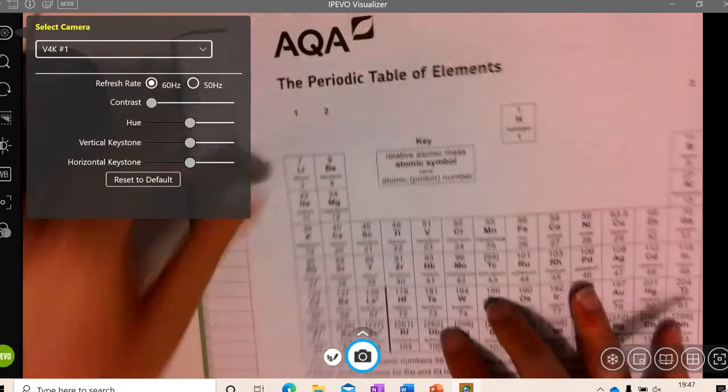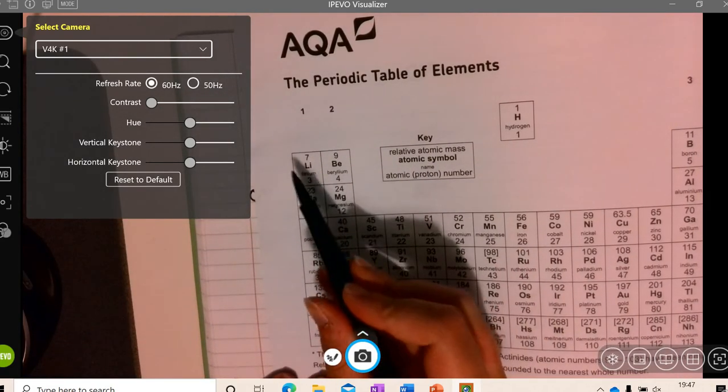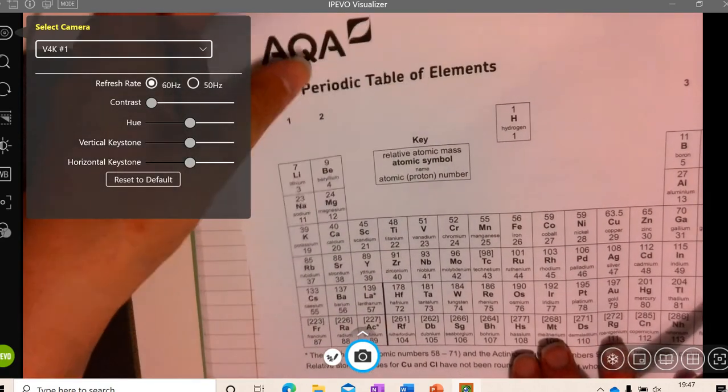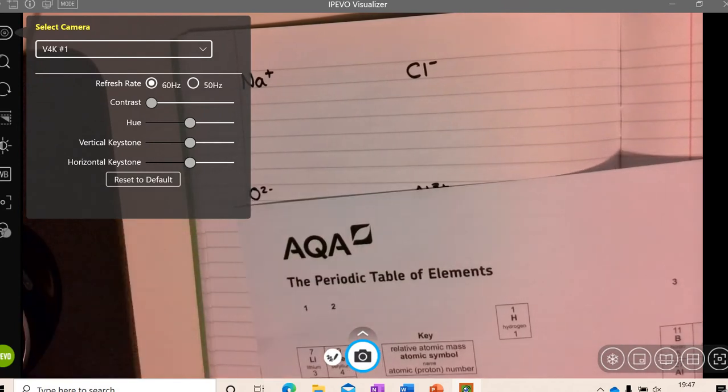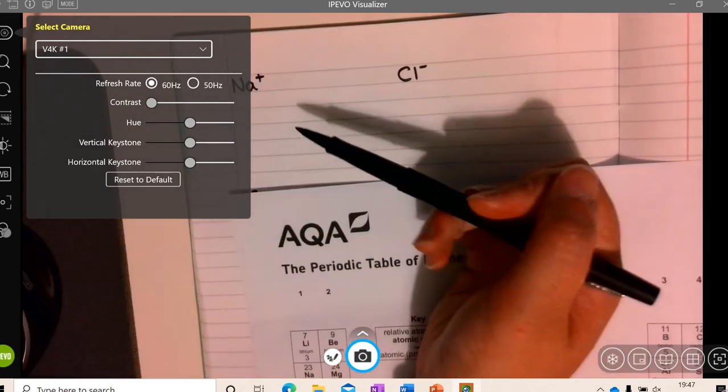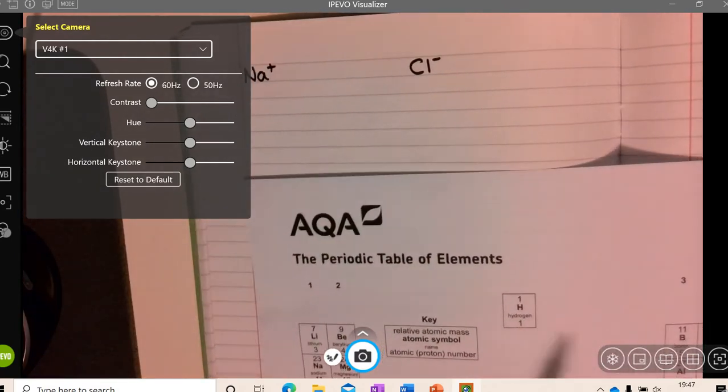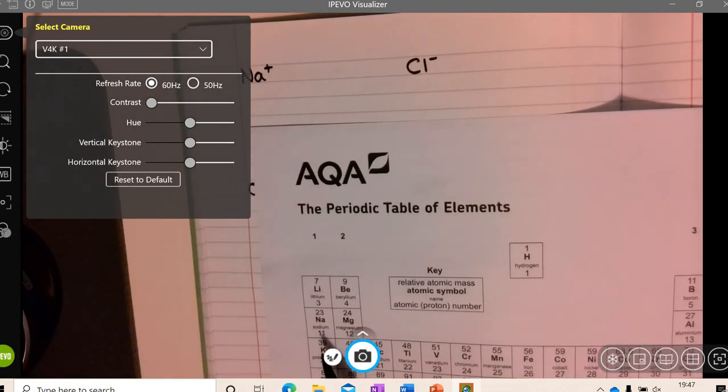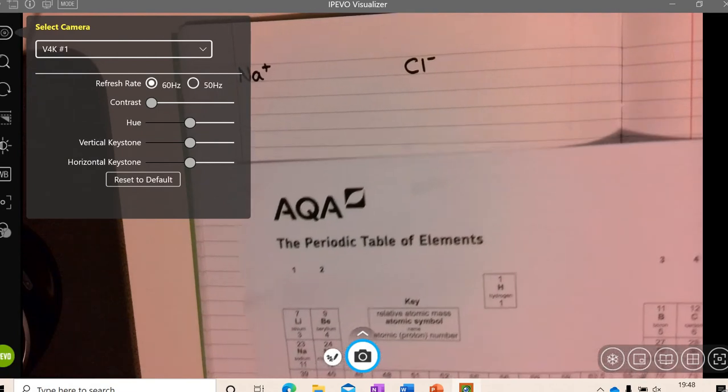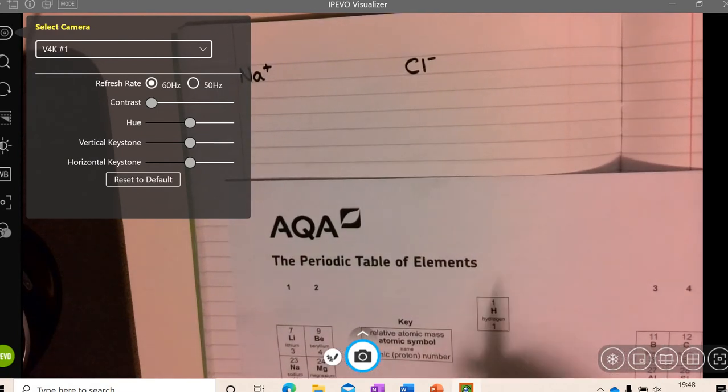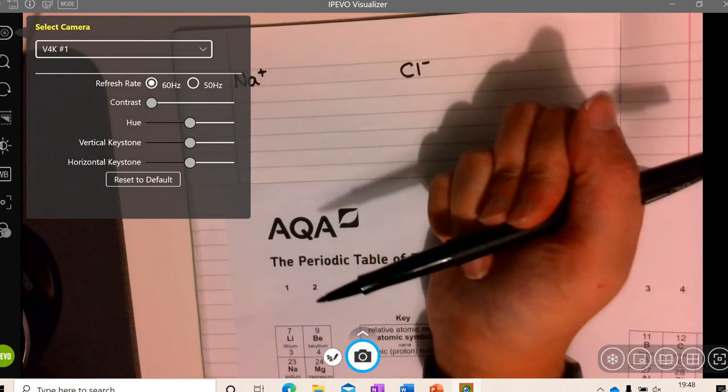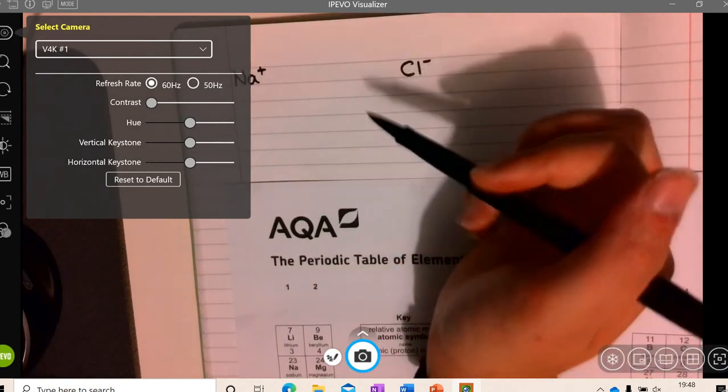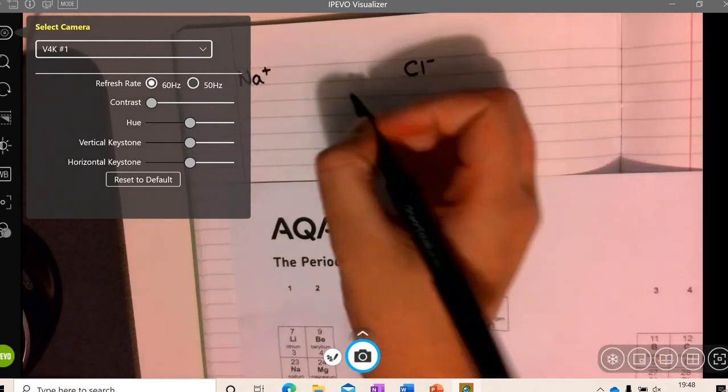So if we look on the periodic table, sodium is in group 1. So it's going to have a 1 plus ion as shown here. We can also see, if I move this up slightly, that the atomic number is 11. So in the atom, there are 11 electrons, but we know to get a plus charge, it must have lost one. So the ion has 10 electrons.